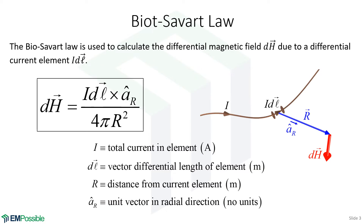Let's visualize what this equation means. I've got the equation written on the left and a visualization on the right. This brown thing is a wire carrying current I. We're looking at some differential piece of current — it carries current I and has a vector differential length with both a direction and a scalar magnitude. We're interested in observing the magnetic field at some point. Since we're observing a magnetic field from a differential current element, we're going to observe a differential magnetic field. The unit vector A_R points in the direction connecting our differential current element toward where we are observing the magnetic field.